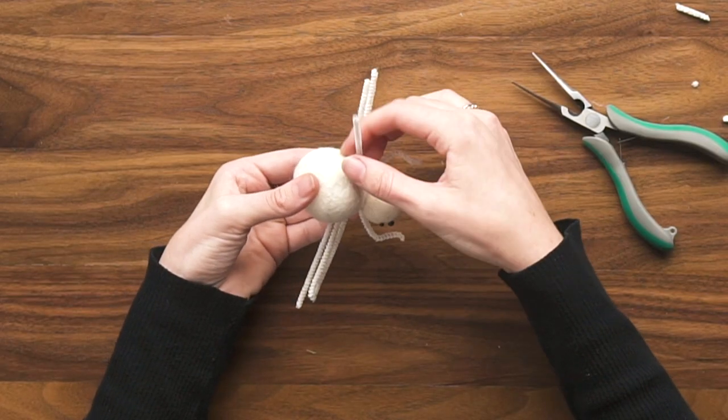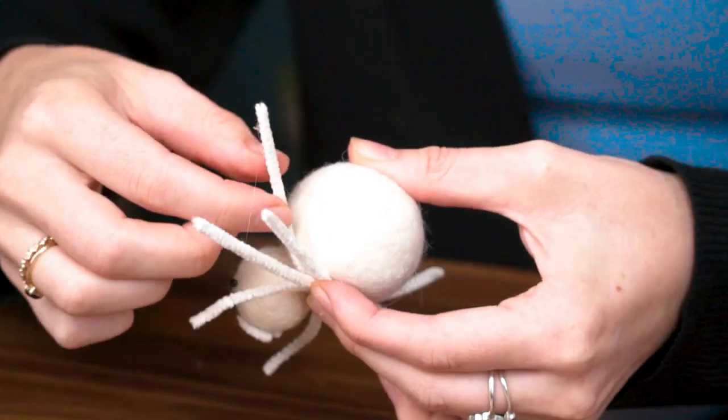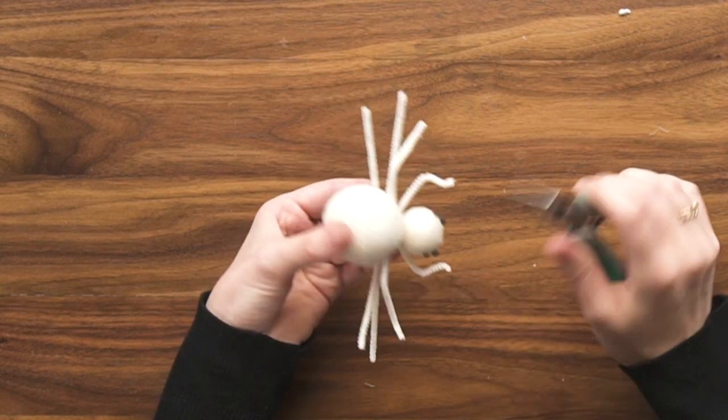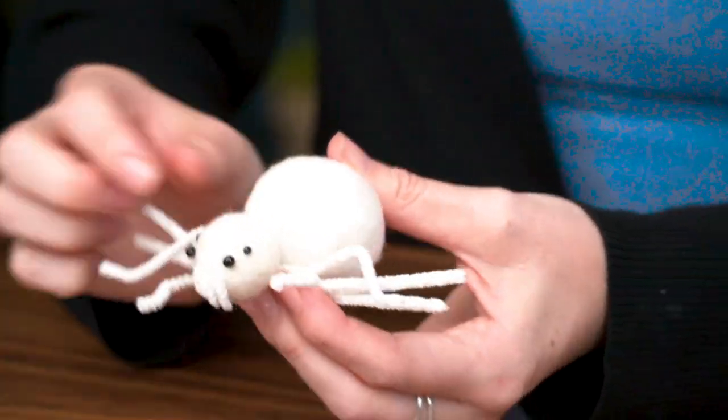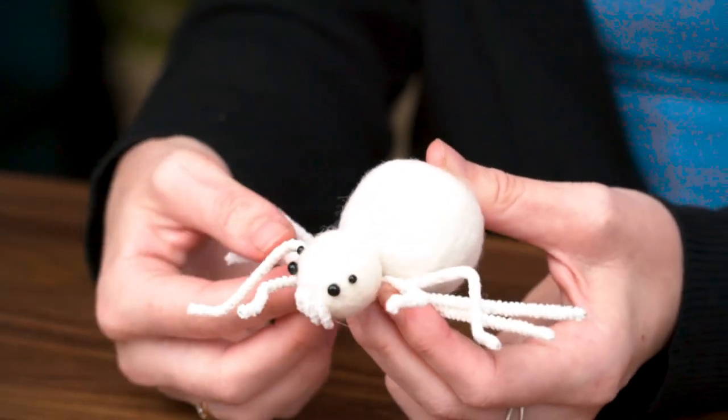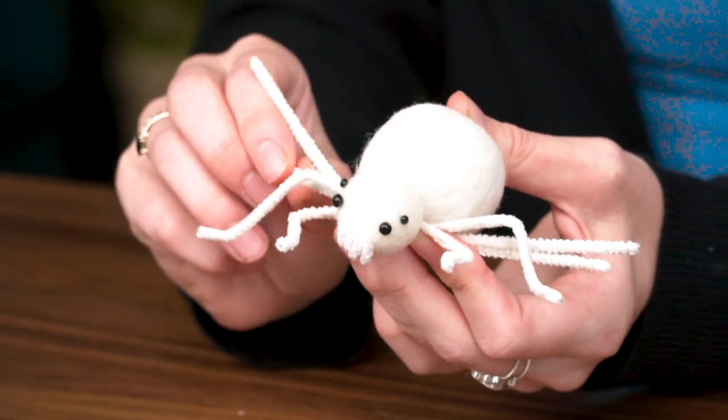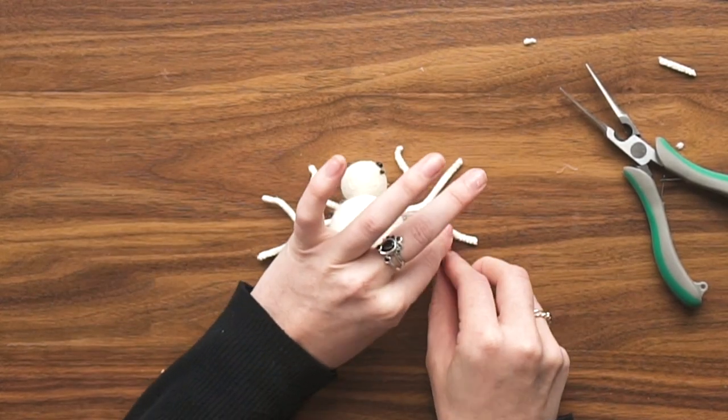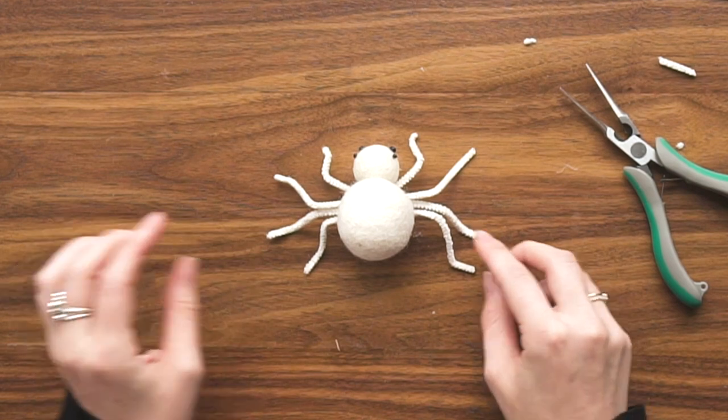We'll do the next set. These ones are also going to kind of go up first and we'll bring them back down, give them some cute little feet. We'll just leave that one that full length for now, we can decide if we want to trim it after. And we'll do the same thing for the next two, but this time we're going to angle them back instead of forward.